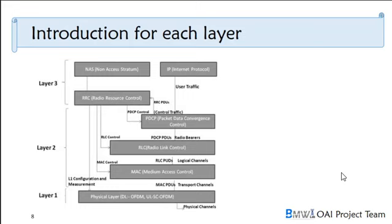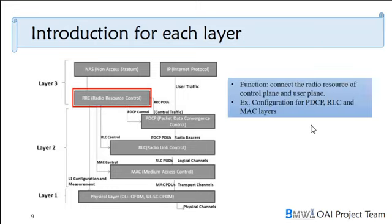Now an introduction to each layer. For RLC — the main purpose is to connect the radio resource of the control plane and user plane. For example, you have a configuration for PDCP, RLC, and MAC layers.